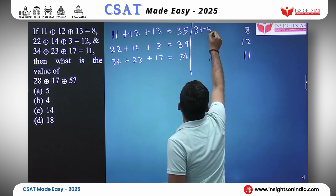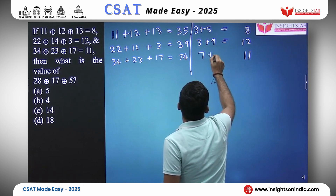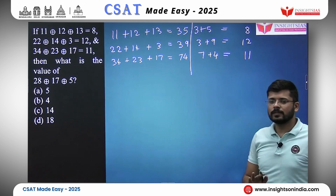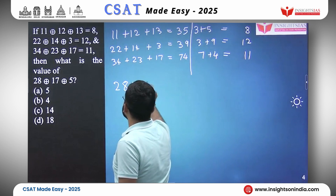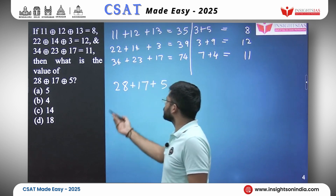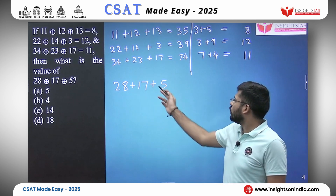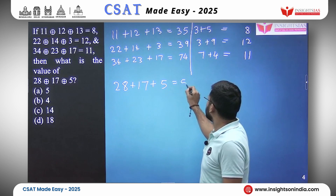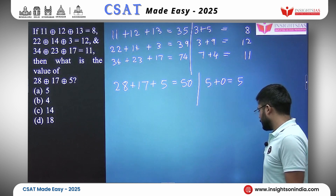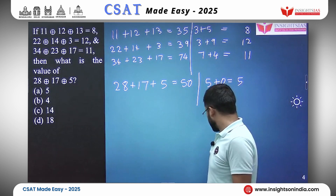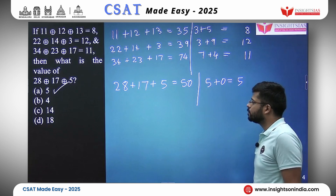It is again sum of digits: 3 plus 5 equals 8, 3 plus 9 equals 12, and 7 plus 4 equals 11. For the last expression 28 plus 17 plus 5 equals 50, and 5 plus 0 equals 5. So the answer is option A, 5.